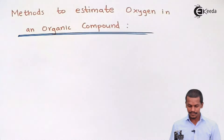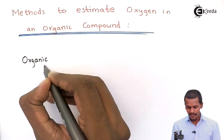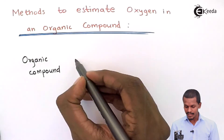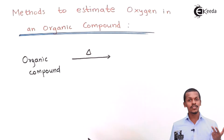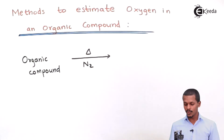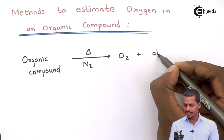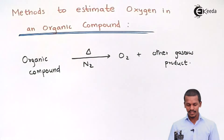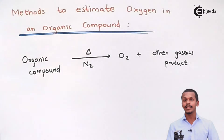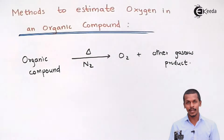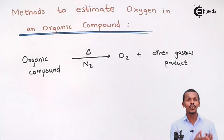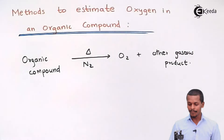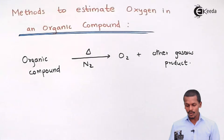Suppose we have an organic compound. It is heated in the presence of nitrogen gas so as to produce oxygen molecules plus other gaseous products. This oxygen liberated from the organic compound indicates that the organic compound contains the oxygen element. If it didn't contain oxygen, this reaction would not occur and we would not obtain oxygen molecules.